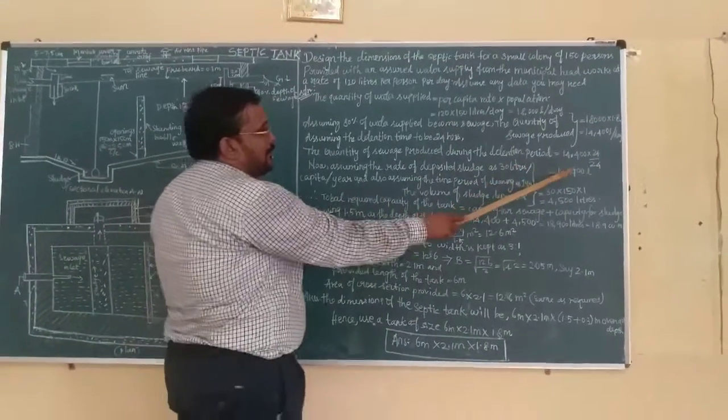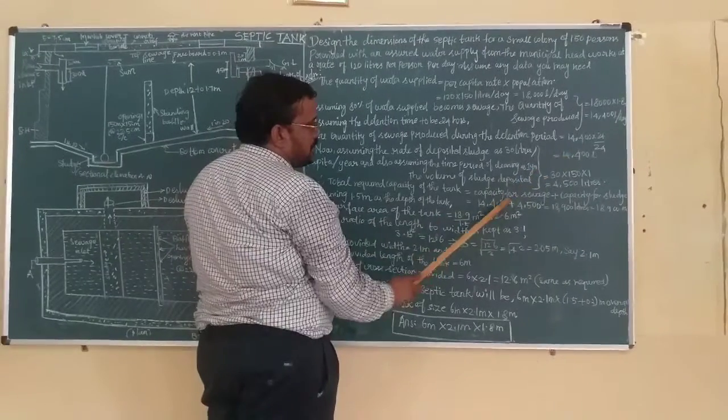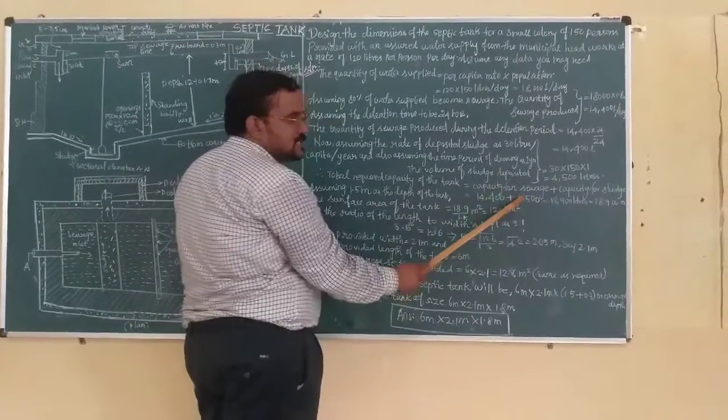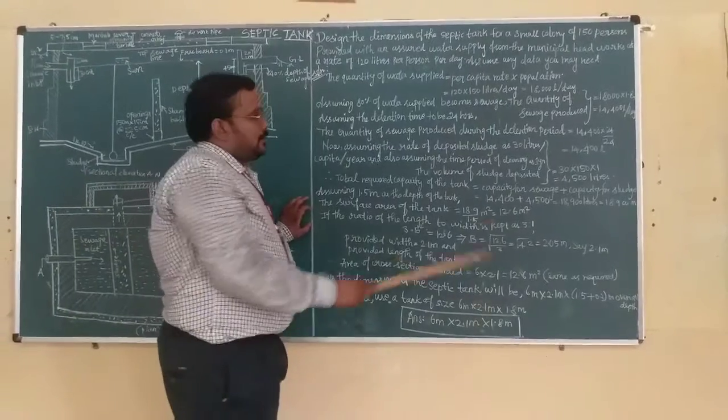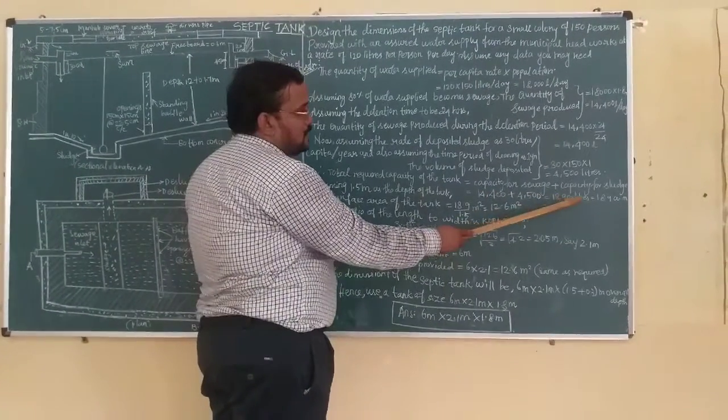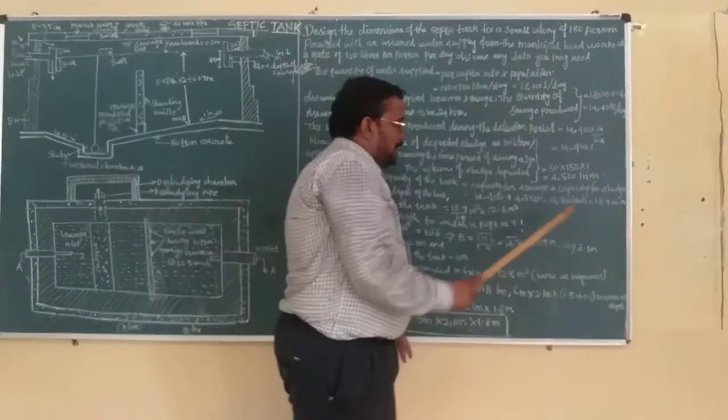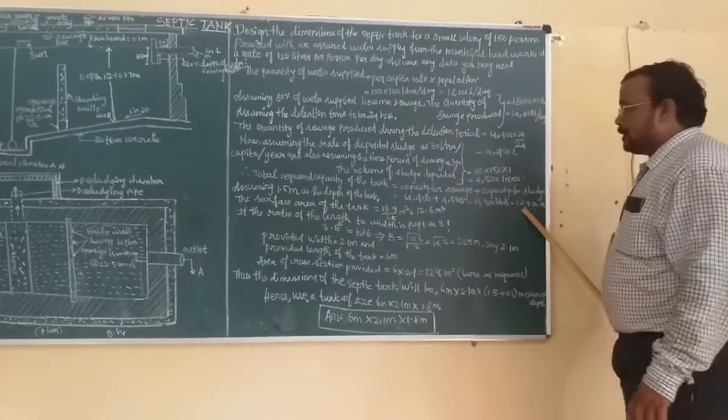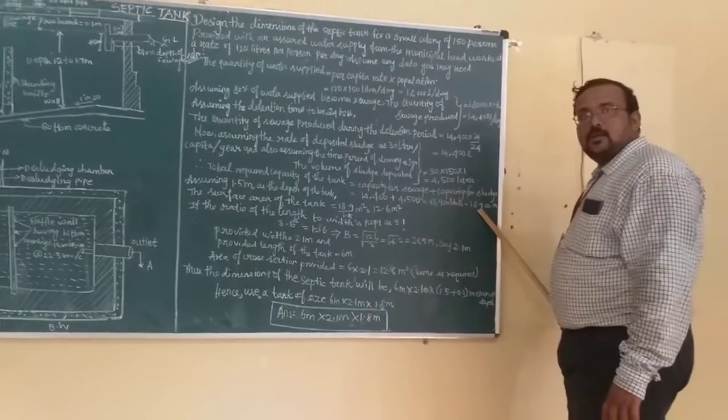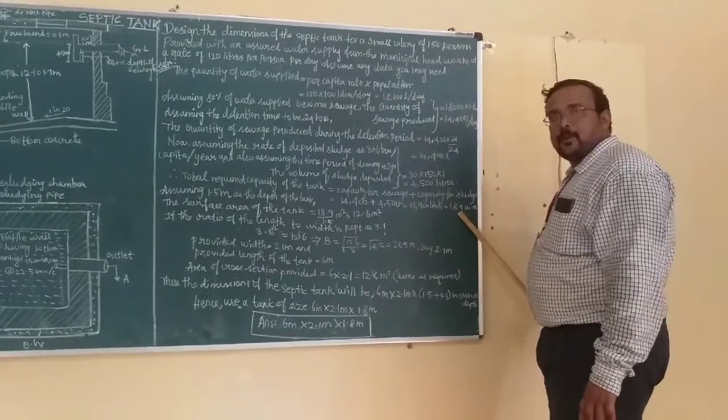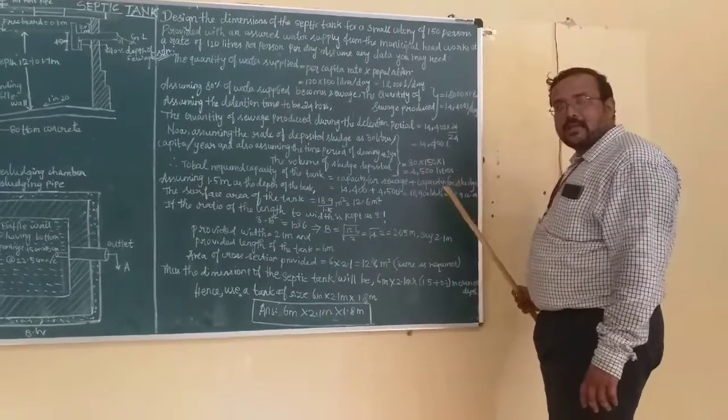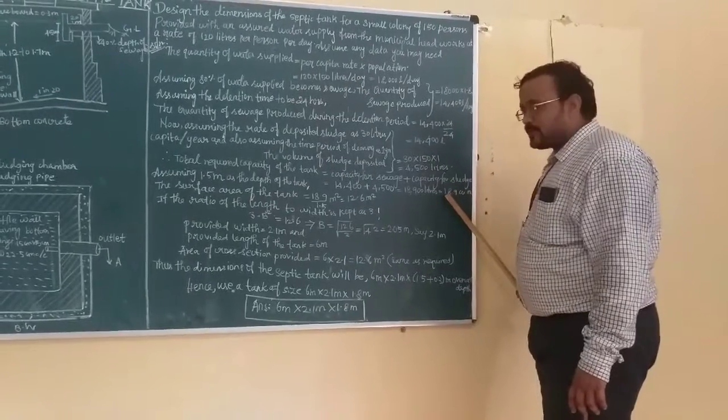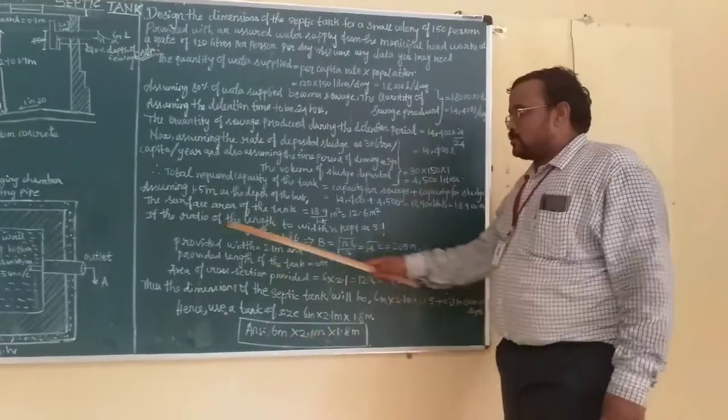So total capacity: quantity of sewage produced plus 4,500 liters sludge - sewage plus sludge - that will give you 18,900 liters. We have to have a volume of 18.9 cubic meters. Volume of sewage and sludge together. We have to have a septic tank which accommodates 18.9 cubic meters. The tank should be 18.9 cubic meters.